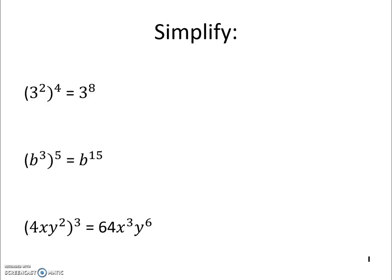On the next example, we have 3 squared to the 4th, which is the same thing as 3 to the 8th. We have a different rule here. We have the parentheses, which means we multiply exponents.